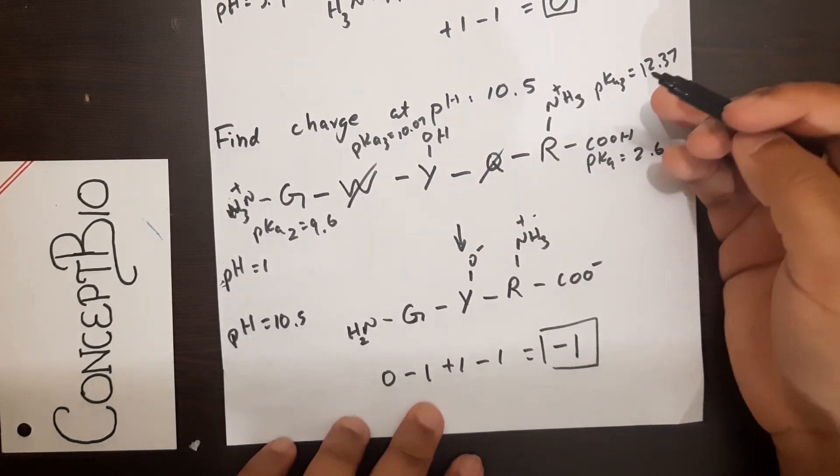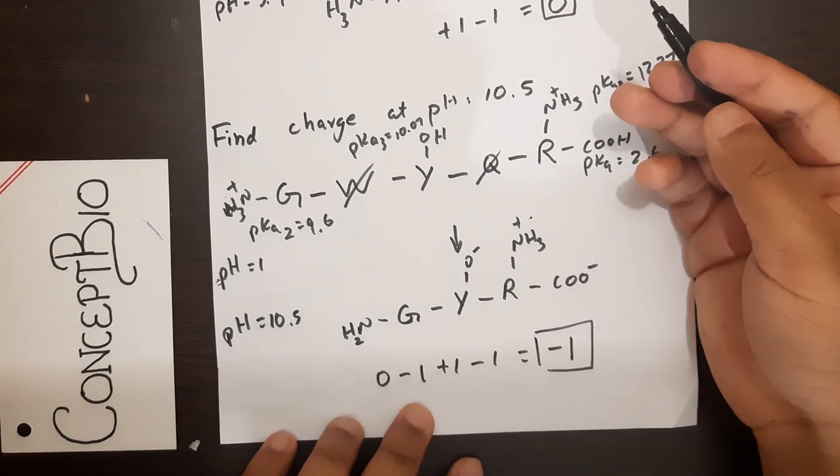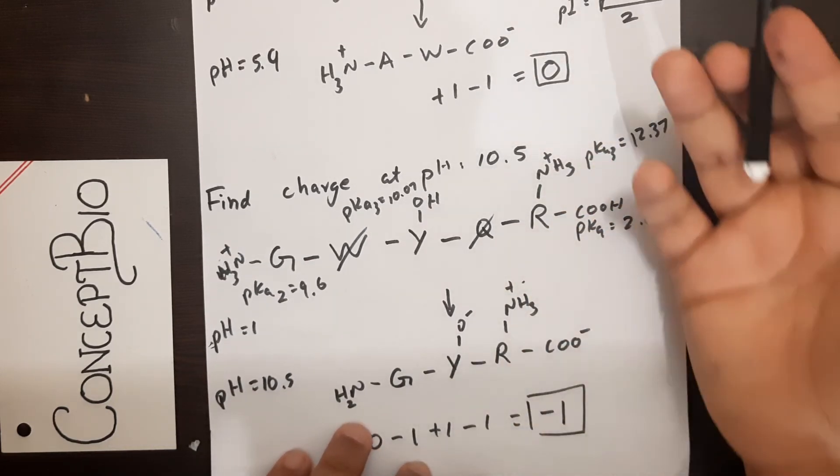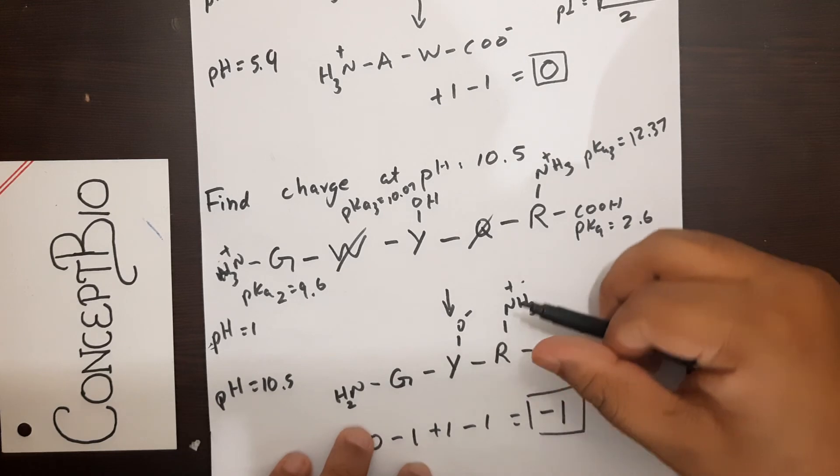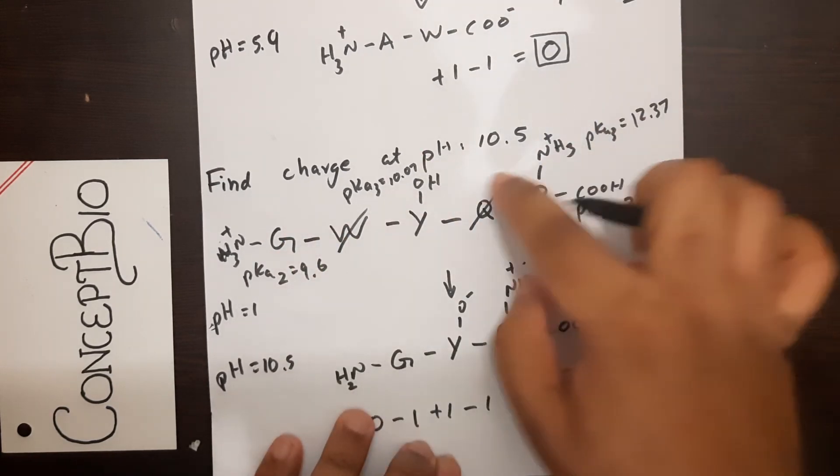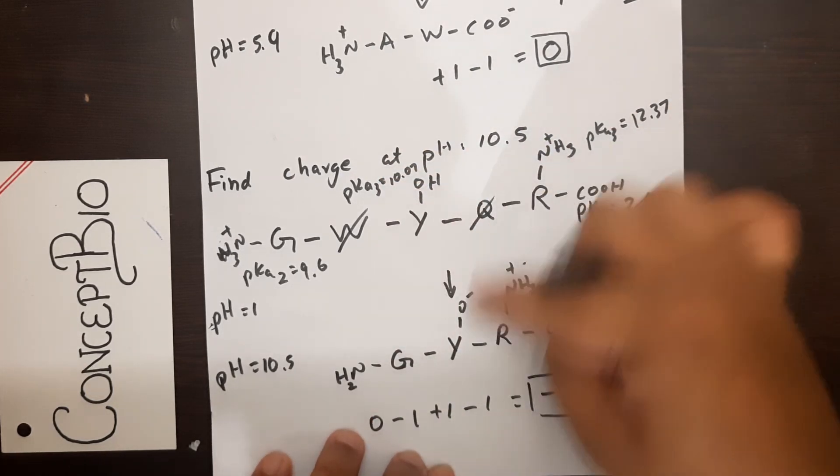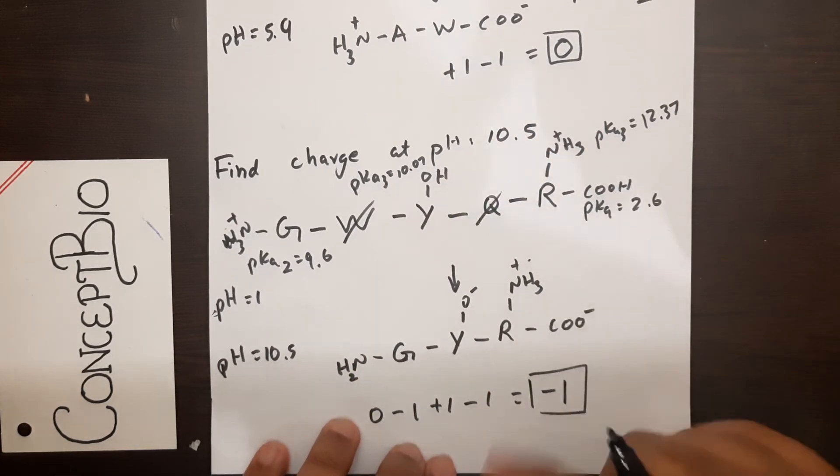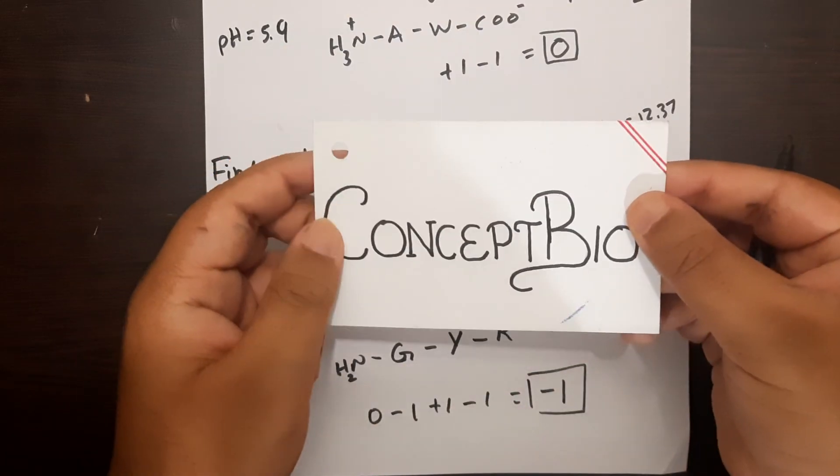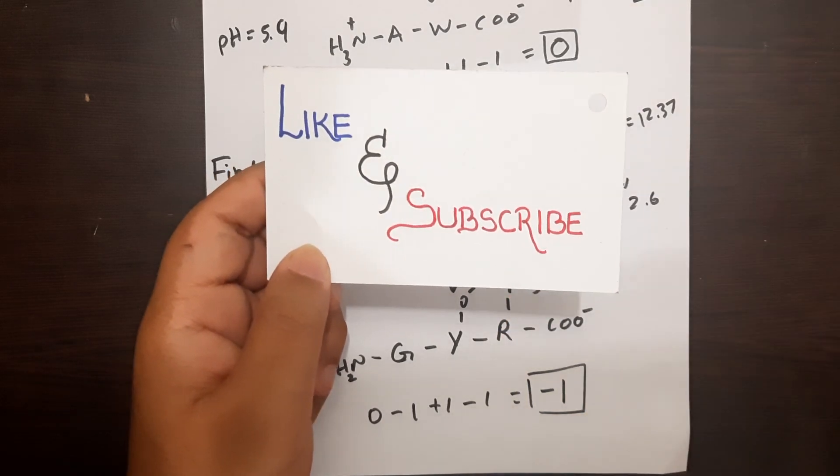You can continue this studying at different pH levels as practice for yourself. I hope this has been easy for you to understand. If you find any doubts, feel free to ask in the comment section below. Remember: keep your terminal amino acids, remove diprotic amino acids, remember the functional groups—I have videos on it—and from its protonated stage, bring it down slowly to the final answer. This is how to find the charge of a polypeptide chain. Don't forget to like and subscribe, and I'll see you guys in my next video. Thank you for watching!